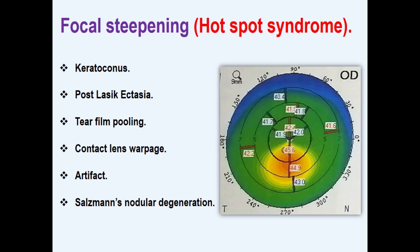What is the hot spot syndrome? It is an area of relatively high power on the axial curvature map. Hot means hot colors, and it may be associated with other topographic or corneal abnormalities. The differential diagnosis includes ectatic and non-ectatic causes.